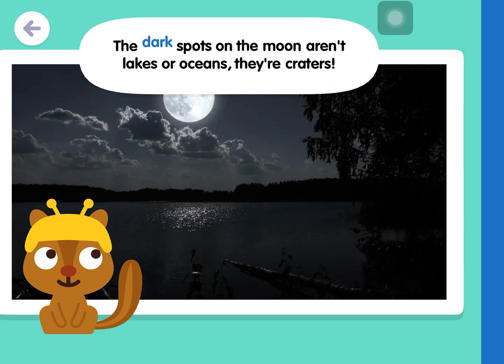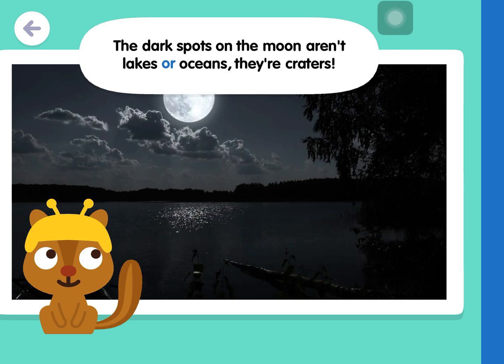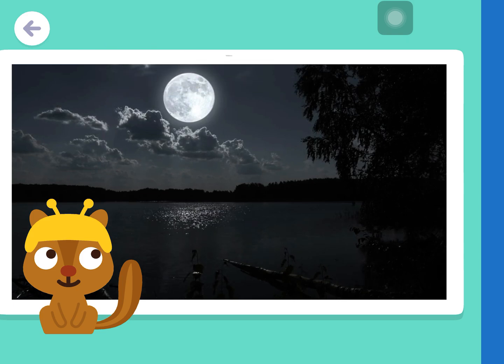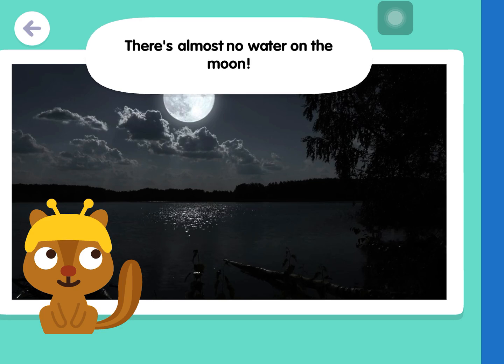The dark spots on the moon aren't lakes or oceans — they're craters. There's almost no water on the moon.